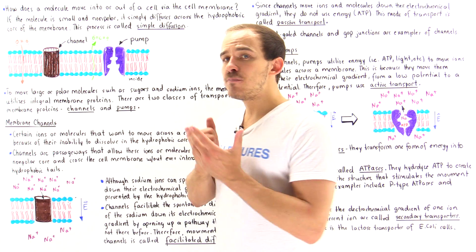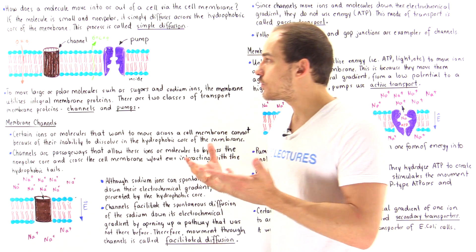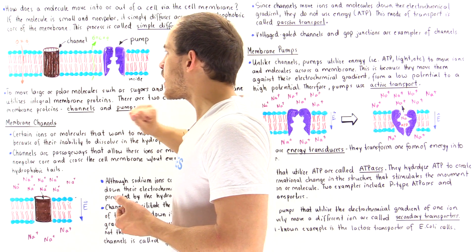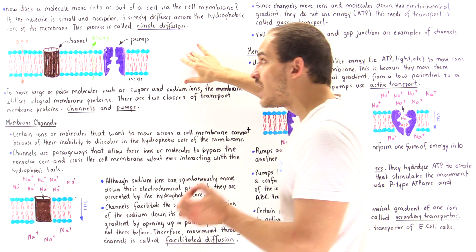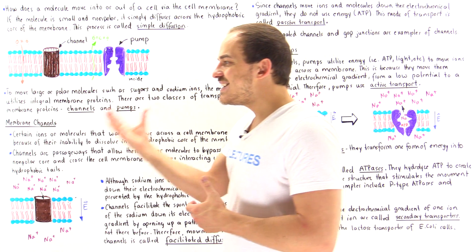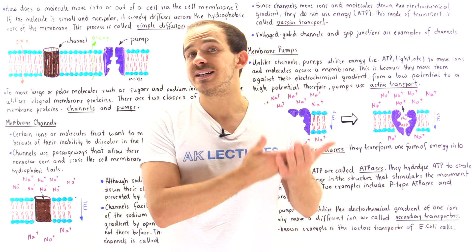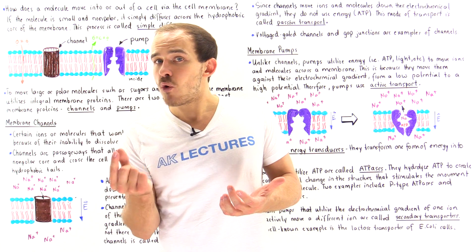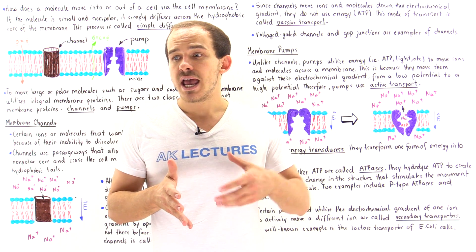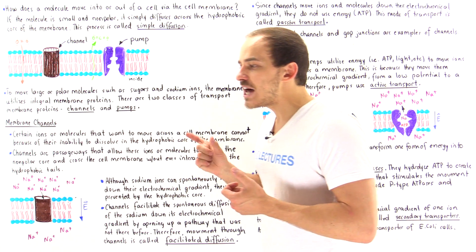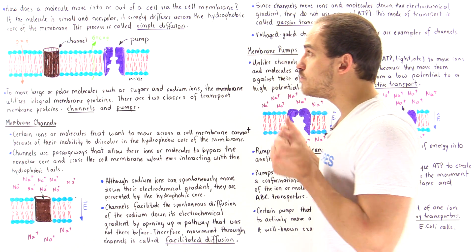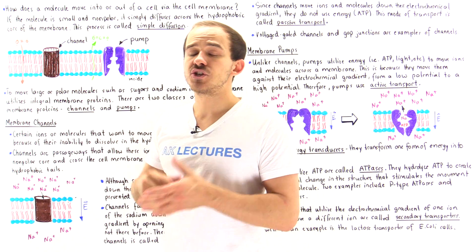To begin, let's focus on non-polar and small molecules. The cell membrane consists predominantly of a hydrophobic region — the entire core of the membrane, this entire red section, is hydrophobic and non-polar because of the presence of hydrocarbon tails from the phospholipid molecules. Because a non-polar molecule can easily dissolve in a hydrophobic non-polar solution, a small non-polar molecule can cross the membrane simply by dissolving inside it. This process — where a small non-polar molecule moves down its concentration gradient from high to low potential through the core of that membrane — is known as simple diffusion.